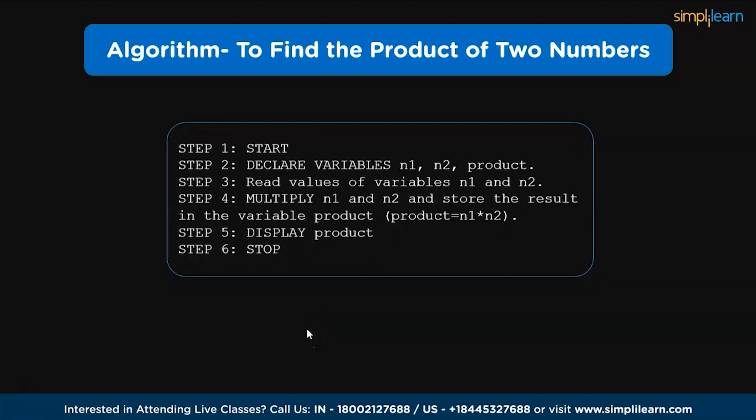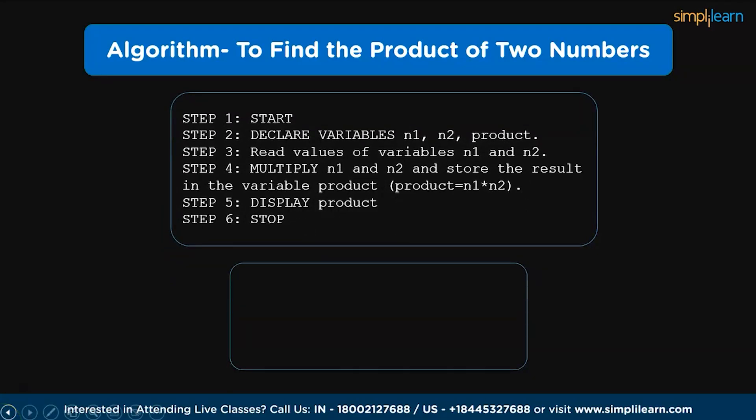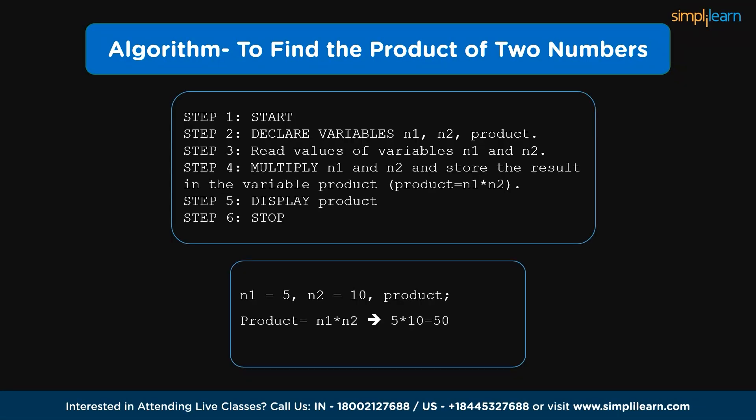So, let's see the example. As discussed in the algorithm, we have variables declaration and let the values of n1 be 5 and n2 be 10. Using the multiply operator, the value of n1 and n2 is multiplied and the result is stored in the variable called product and finally, it will be displayed as an output. Here n1 value is 5 and n2 is 10, so we are going to multiply it: 5 times 10 equals 50 and that is stored in the product and displayed as an output.